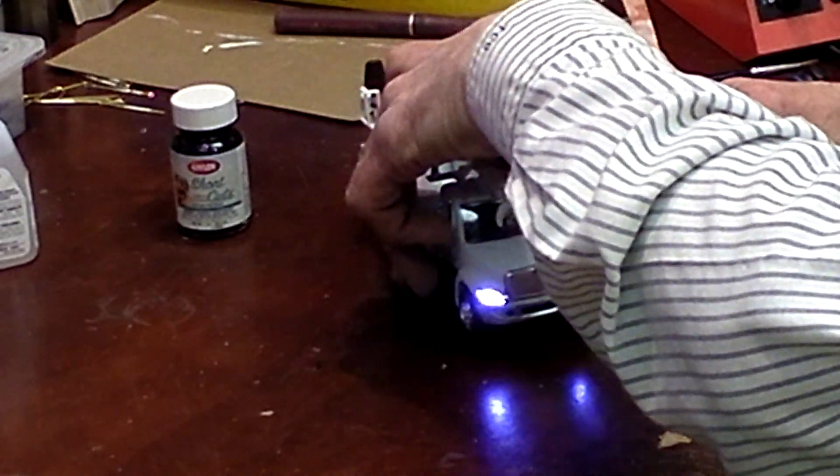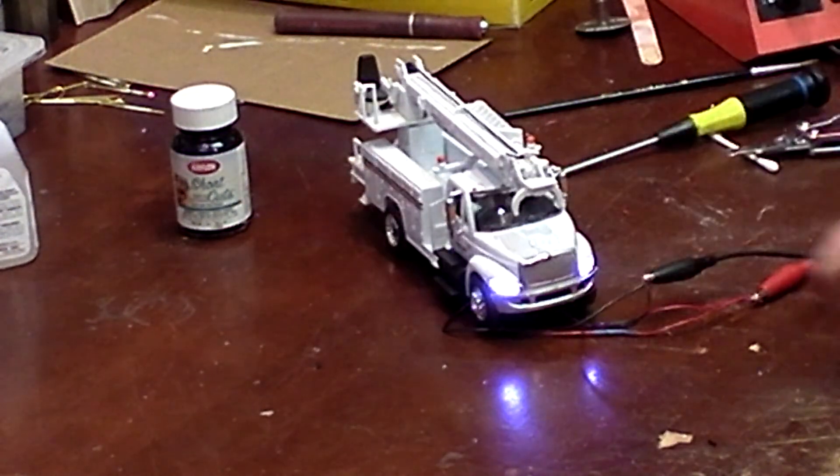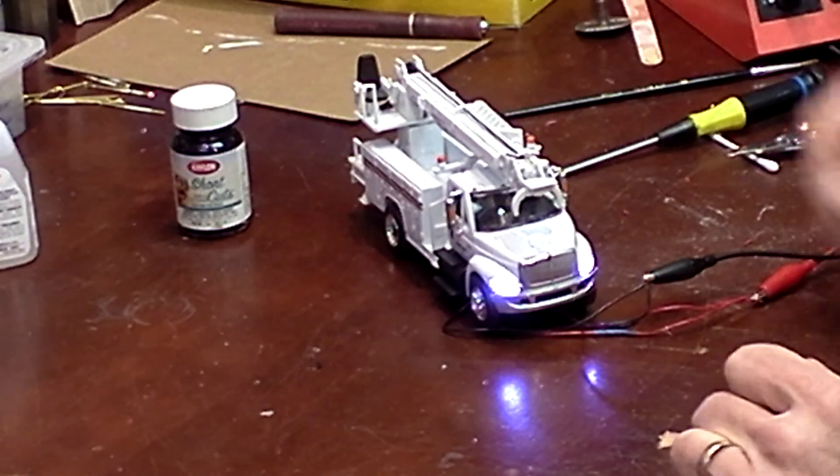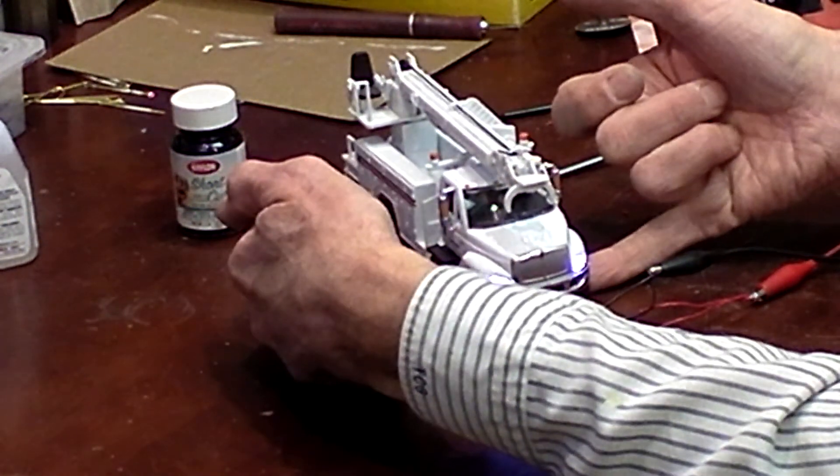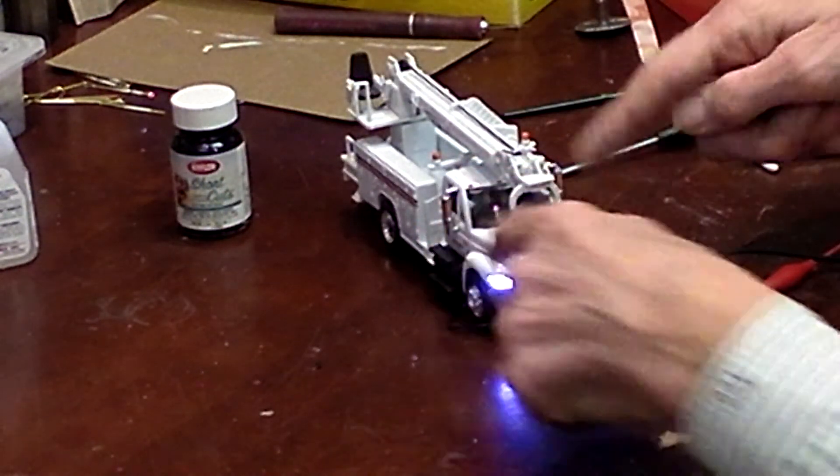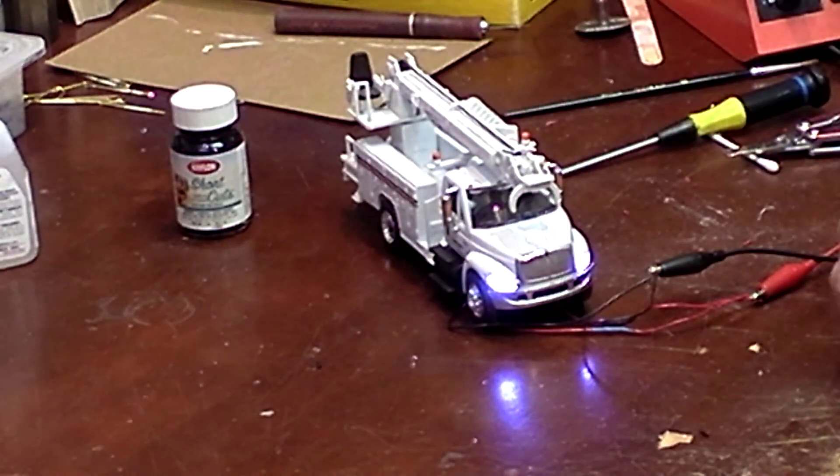And there you are, headlights in a truck. Now when I take this back up to the Choo-Choo Barn, I'll drill two holes, one behind each one of these wheels, drop my wires down through there, and then I'll be able to hook everything up from underneath.